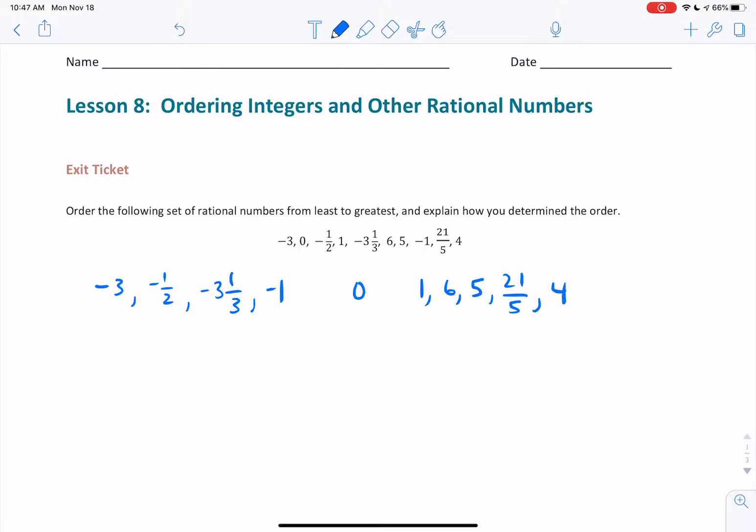So I want to figure out how to number these. It looks like the smallest number or the least number is negative 3 and 1 third. The greatest number is 6. So as I prepare my number line, I want to make sure I can include each of these numbers in. Since I have a variety of fractions, I'm going to go ahead and use an interval of 1. But I am going to make sure that I go beyond negative 3 and 1 third to the left and all the way up to 6.